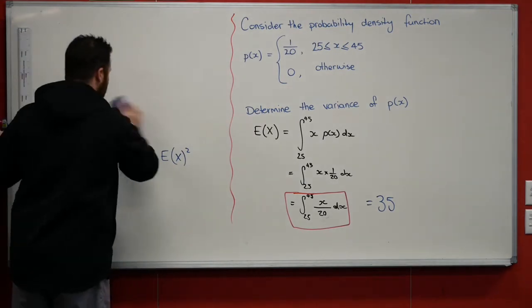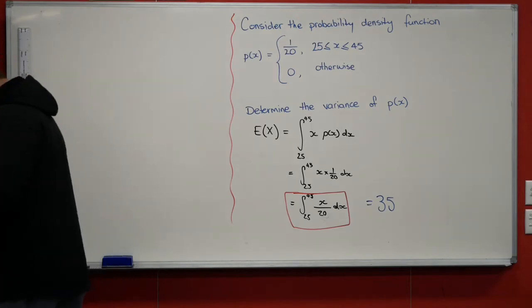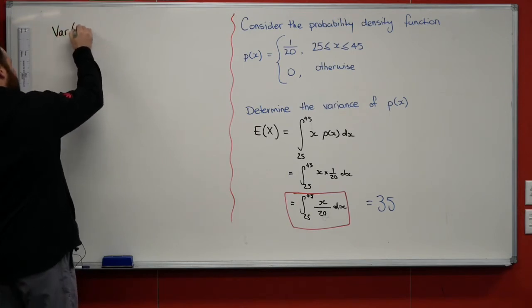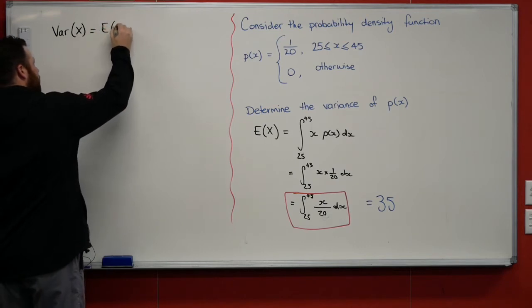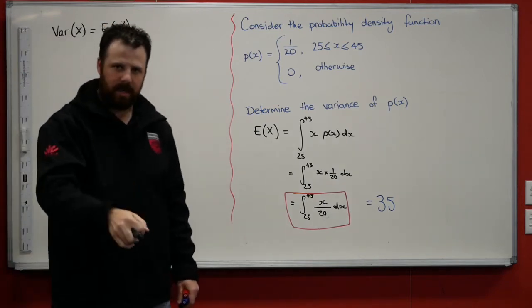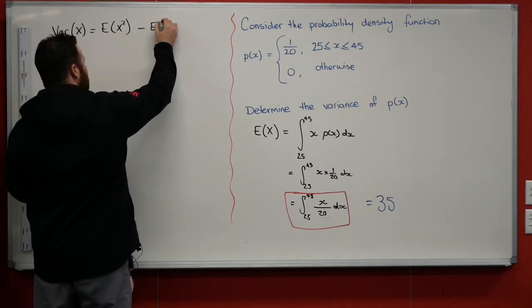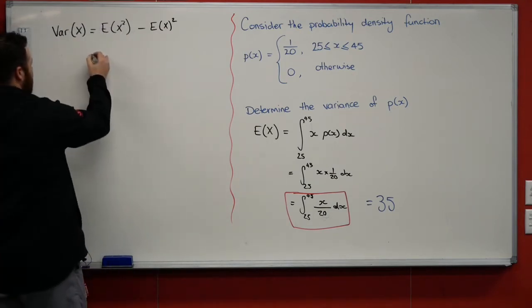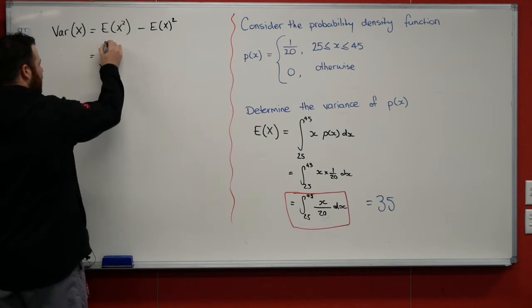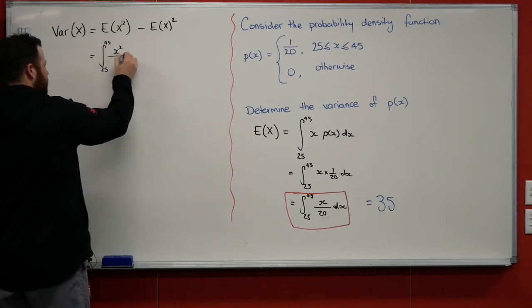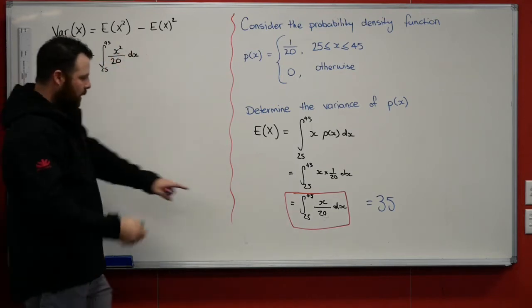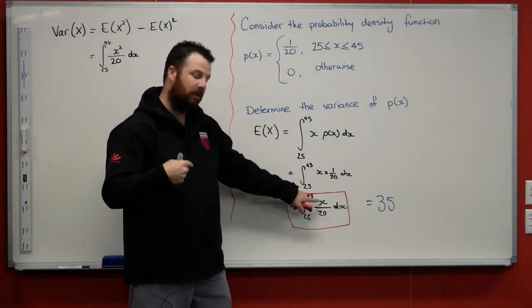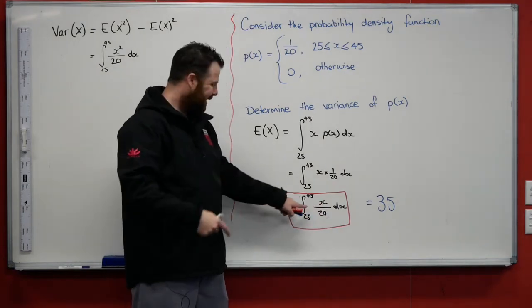So coming back over here, I'll do it in black. The variance of x is going to be equal to substitute x squared into the expected value minus the expected value squared. So what we're going to do is integrate between 25 and 45 of x squared/20 dx. Remember that we said the expected value we'd find by integrating between 45 and 25 of x/20. So at this stage here, you substitute x squared in.